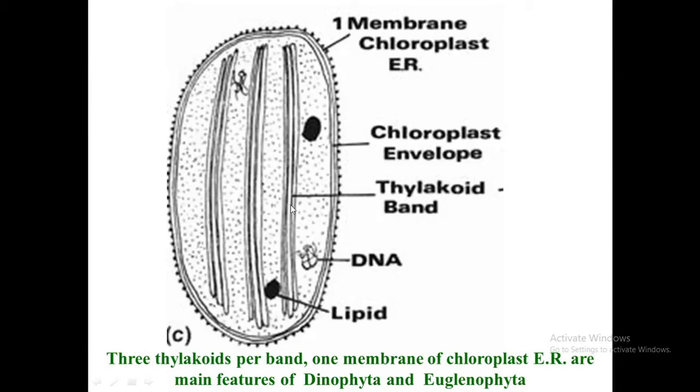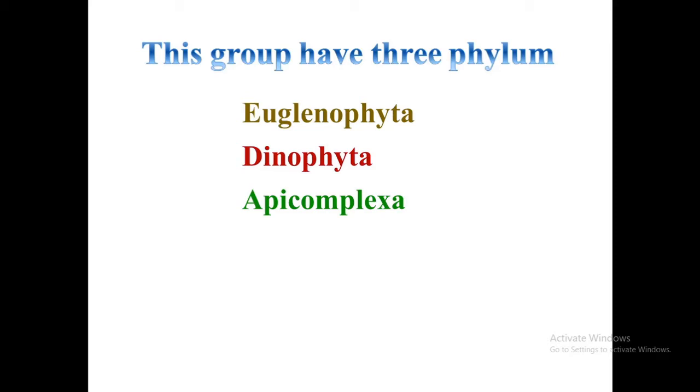The third group within Group 3 is Apicomplexa, which are heterotrophic flagellates with colorless plastids.